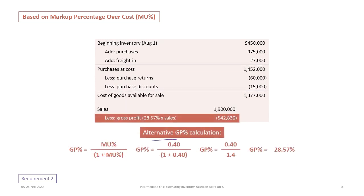If you want a formula for it, we can calculate the GP percentage as the markup percentage divided by 1 plus the markup percentage. So our GP percentage is 40% divided by 100% plus 40%, which is 40% divided by 140% — or in decimals, 0.4 divided by 1.4 — giving us 28.57%. These are based on percentages, so taking everything back to decimals makes perfect sense: 0.4 divided by 1 plus 0.4 gives 0.4 divided by 1.4, and there's your 28.57%.